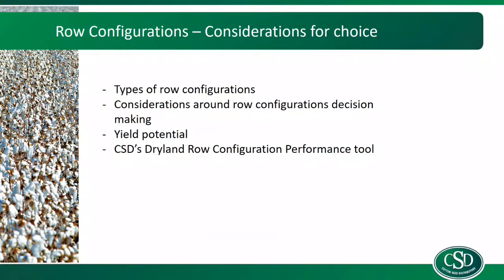Afternoon, everyone. My name's Angus Marshall. I'm the Extension and Development Agronomist for the Border Rivers, St George, and Gwydir Bandy. I'm going to run you through some of the basics: the types of row configurations, considerations around row configuration selection, yield potential and comparisons between different skip row configurations, and then I'll finish on CSD's Dryland Row Configuration Performance Tool.